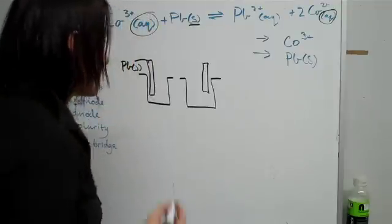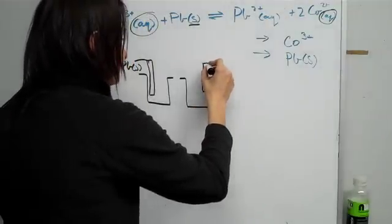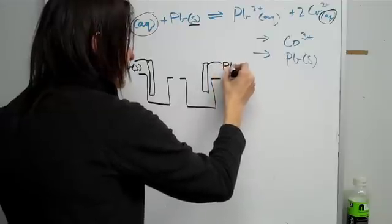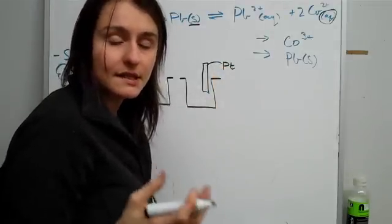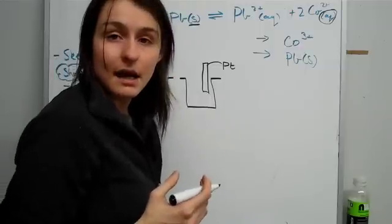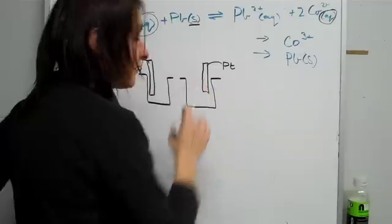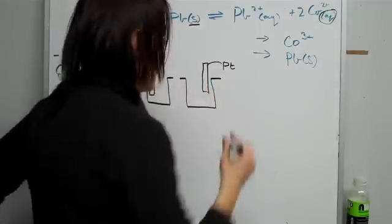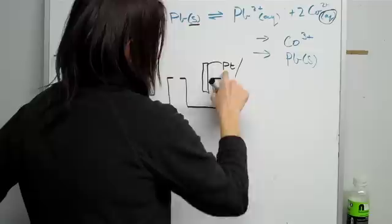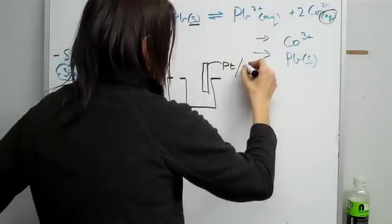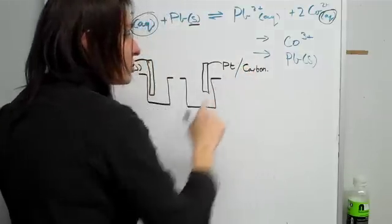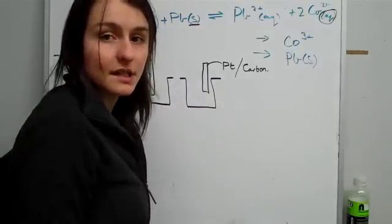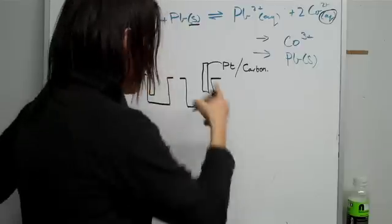And because both of them are in aqueous, then you can't have cobalt metal. What we have instead is either platinum, something inert, something that doesn't react. We need something that is inert and can basically have electrons passing through it. We can have platinum or we can have carbon. We only choose these when all of it is in aqueous in a particular half cell.